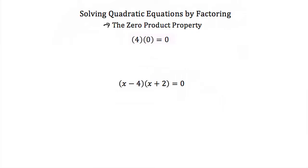Now remember, if you multiply any number by zero, that's always equal to zero. So if you have four times zero, that's equal to zero. The same thing works with polynomials and binomials.